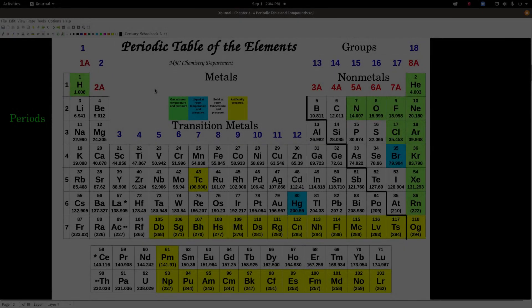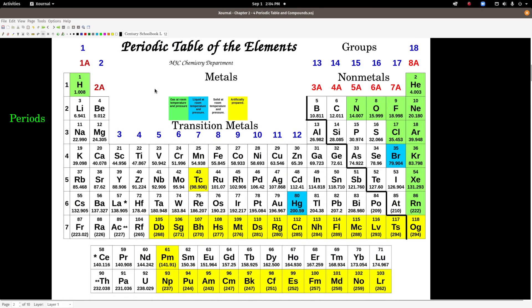Here's a periodic table. There are ways of categorizing the elements in a periodic table. A periodic table lists all the known elements. Each of these letters or combinations of letters is the symbol for the element. H, for example, is hydrogen, Li is lithium, Na is sodium, and so on.